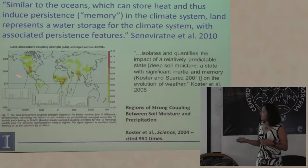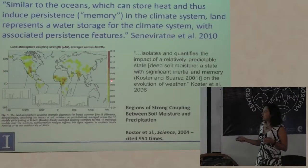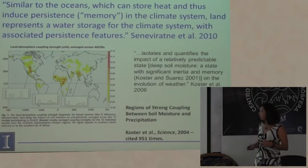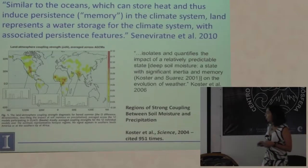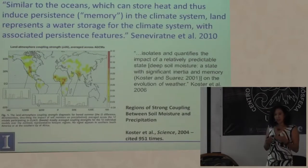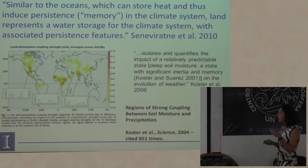Lo que están viendo aquí es el acoplamiento entre la humedad del suelo y la precipitación de junio, julio y agosto. Principalmente están viendo regiones calientes donde la humedad del suelo parece acoplarse con la precipitación. Este es como el Monzón de Norteamérica que muchas personas están estudiando, y también otras regiones del mundo. Esta serie de artículos están usando diferentes modelos para sacar esta imagen global.